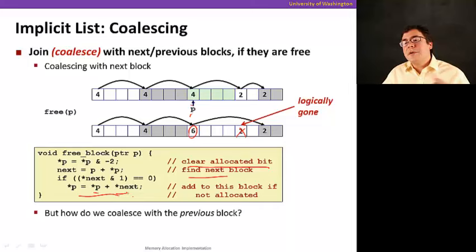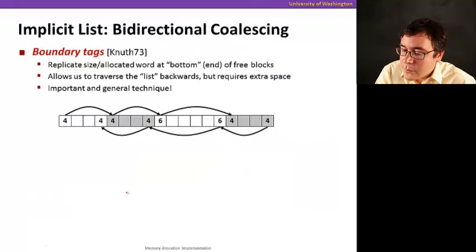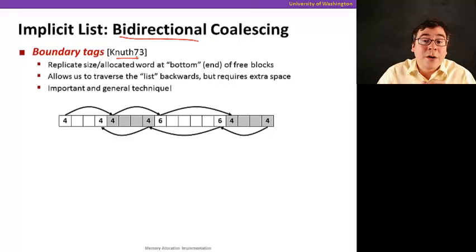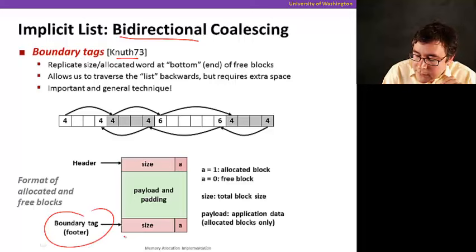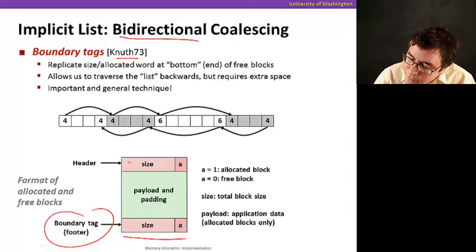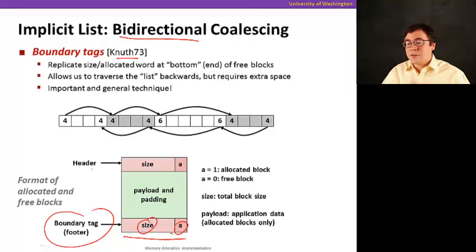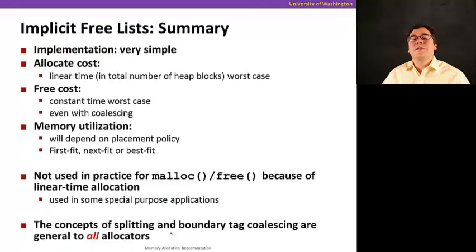But now, how do we coalesce with the previous block? Suppose that I wanted to free a block and I free the block, but the previous one is also free. How do I point backwards? I could just start from the beginning of the heap and scan again, but that's slow. And remember, we want to have high throughput. So that's what we're going to do. We're going to do bidirectional coalescing. This was invented a long time ago. And the idea is to replicate the size here, the header at the bottom. So we replicate the header at the bottom, so both the size and the allocated bit, and I can use that to traverse it backwards, so we can just join them. Pretty cool, isn't it?